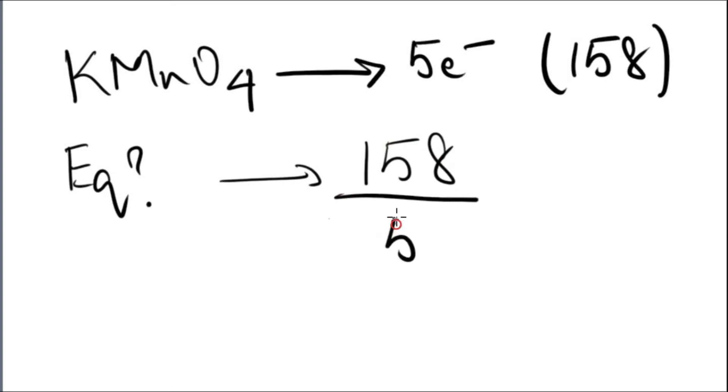Now you take this equivalence number and then divide it by the volume of solution in liters and that's how you will get your normality.